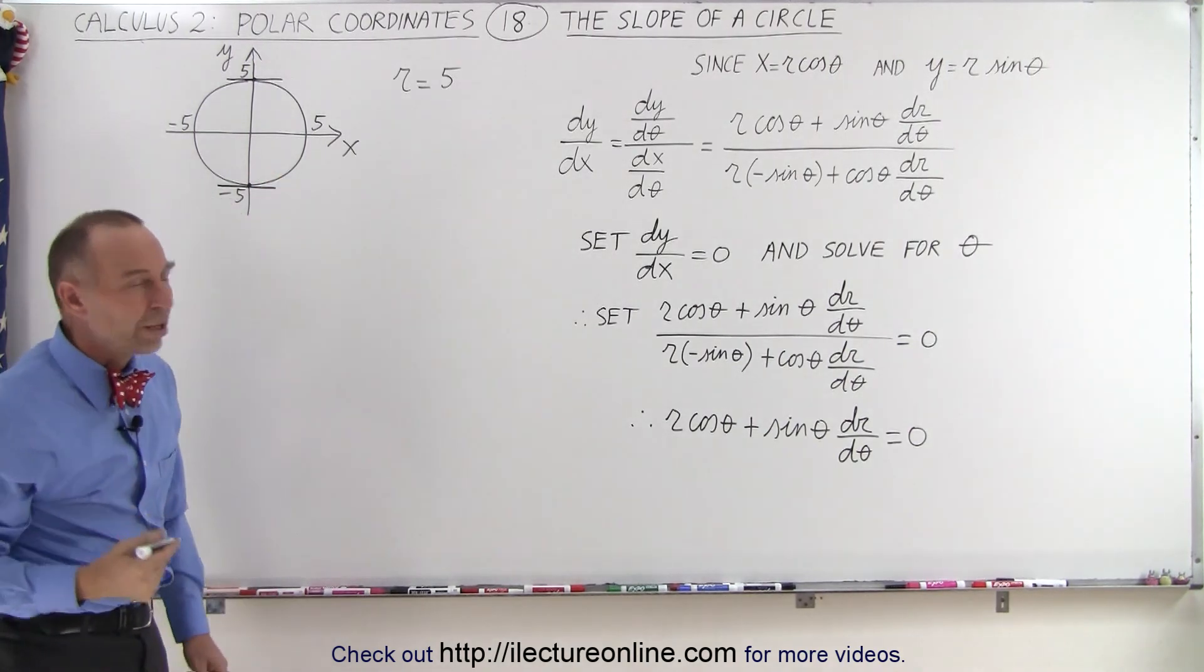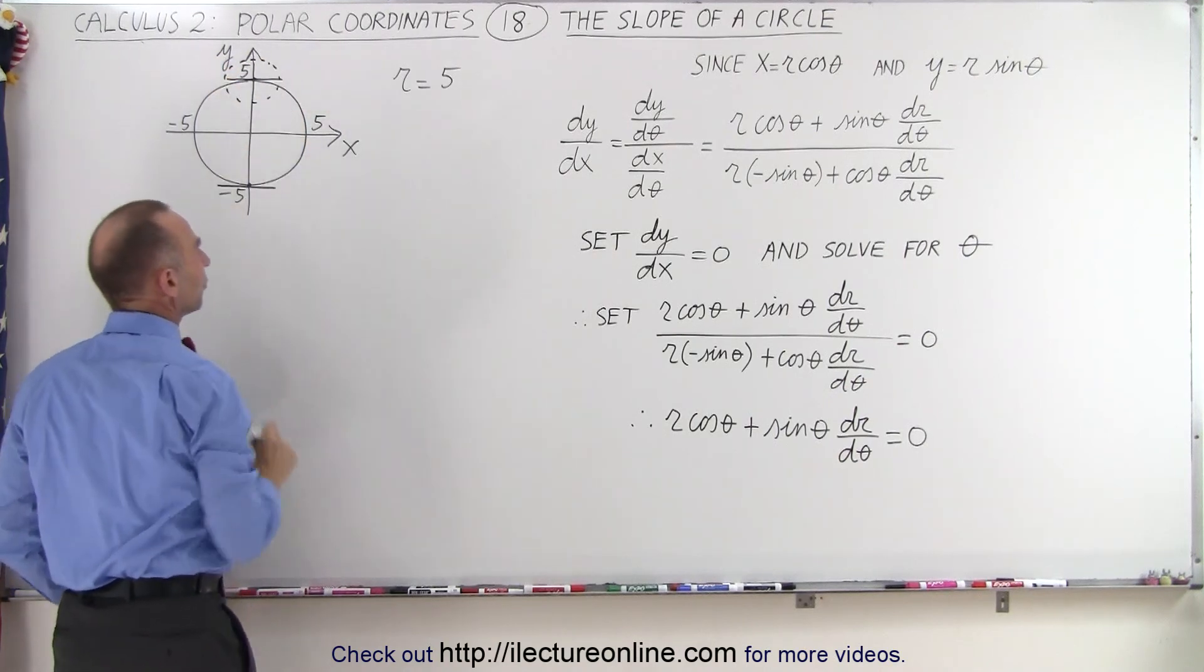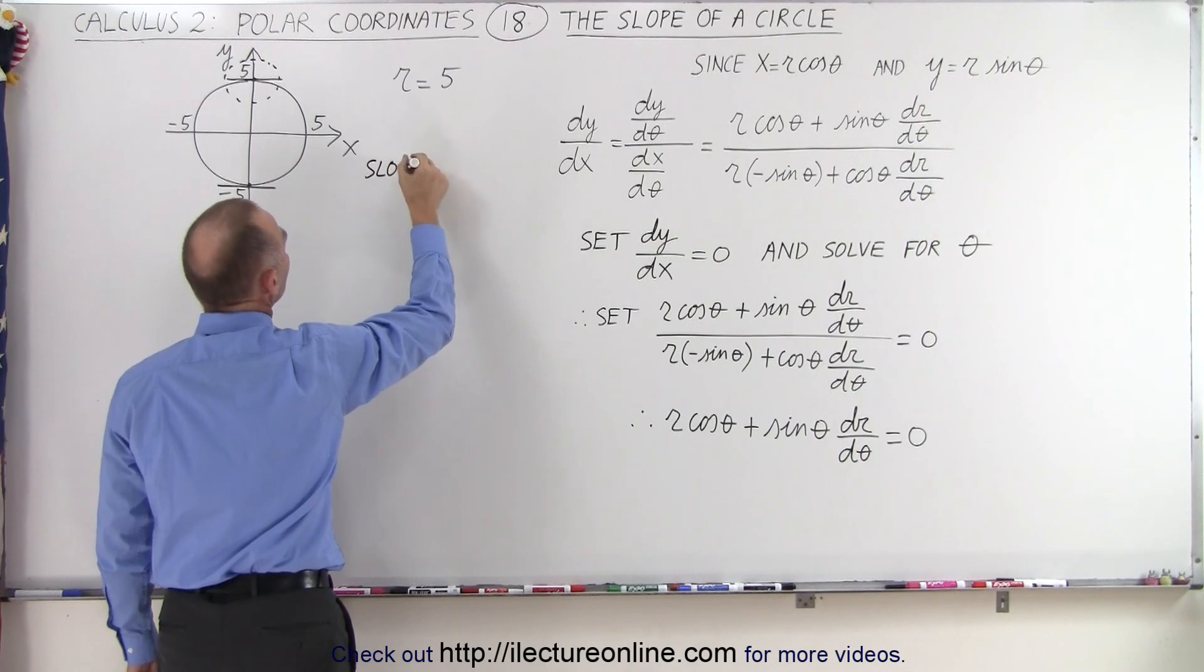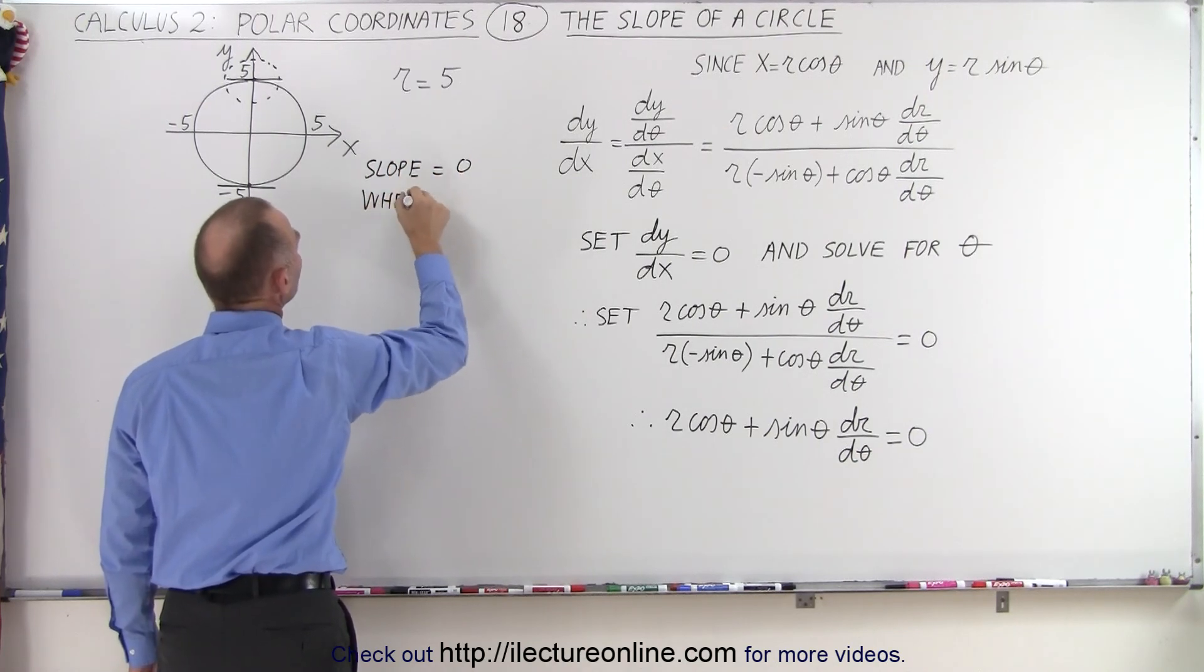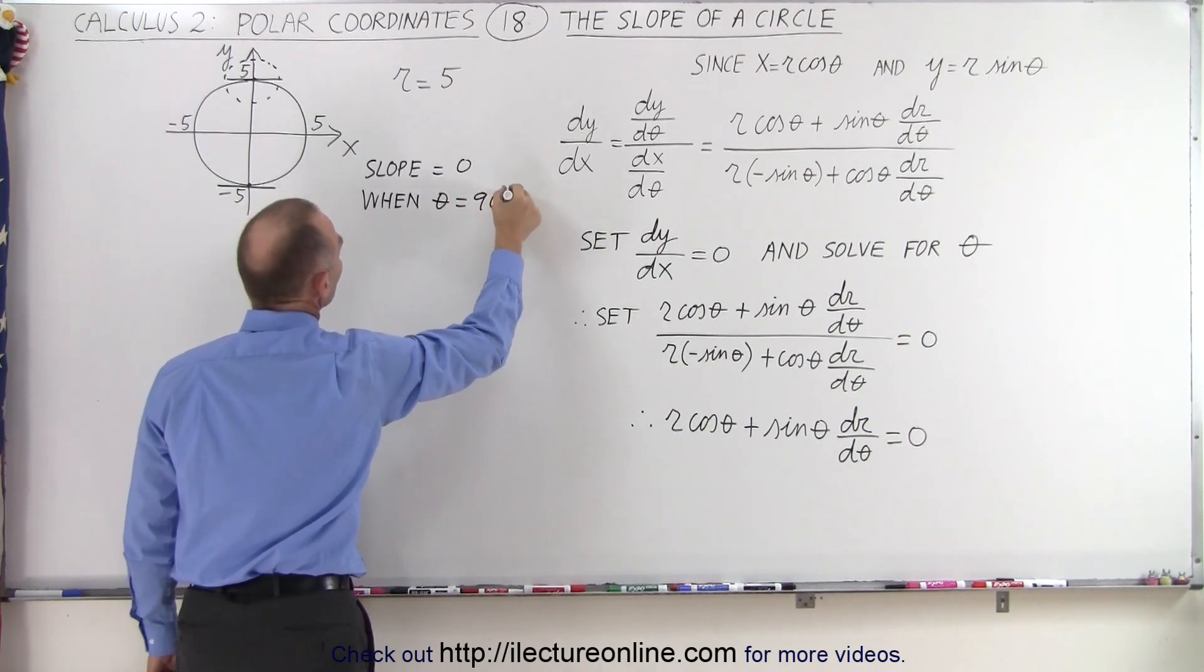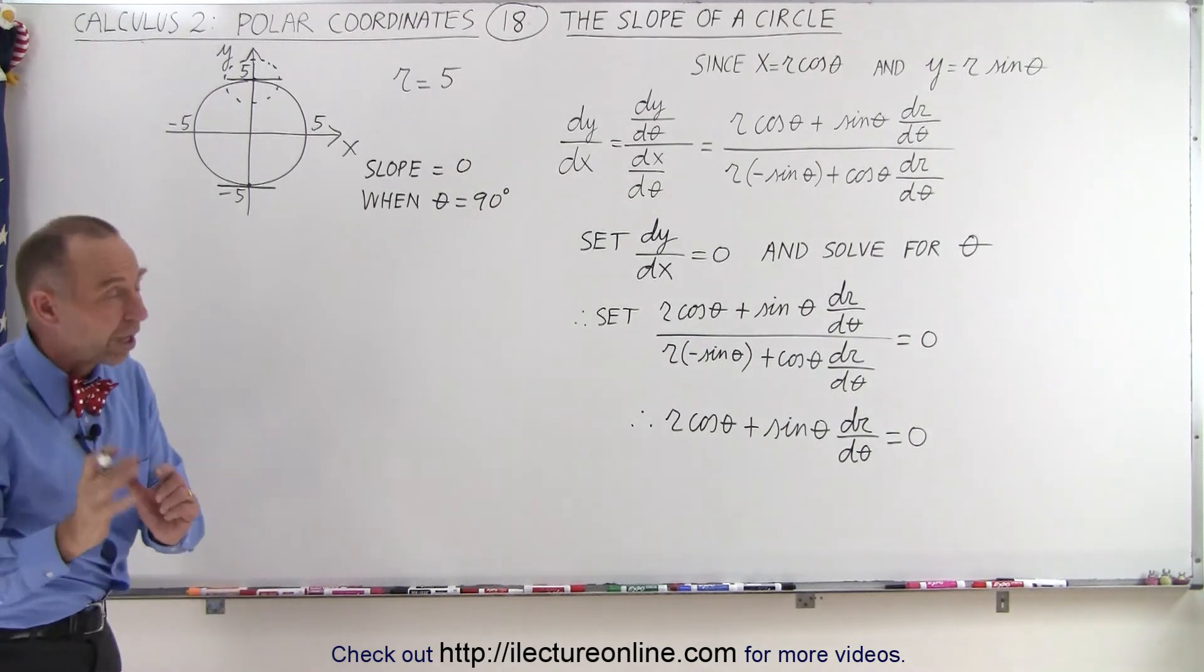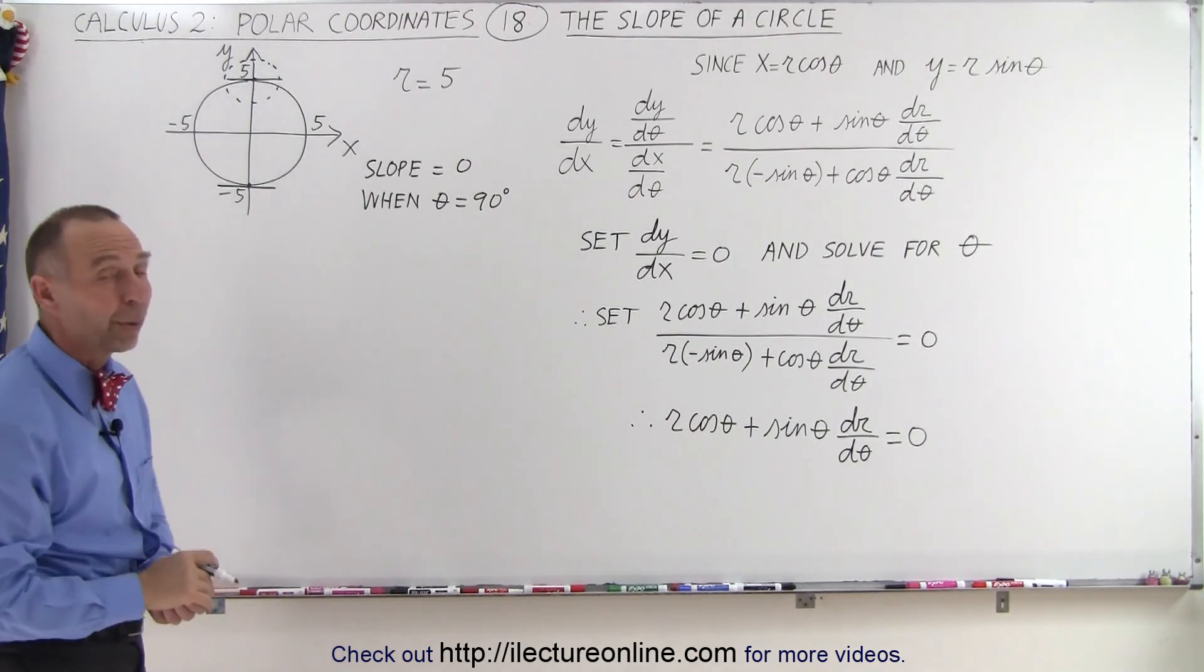So with a circle, there's two locations. So let's concentrate on the very top right here. So we realize that the slope is 0. Slope equals 0 when the angle theta is equal to 90 degrees. Of course, it's also equal to when the angle is 270 degrees. But let's concentrate on the very top portion right there. We'll plug in what we have and see what we end up with.